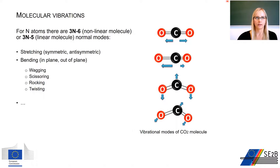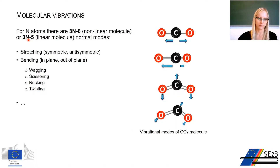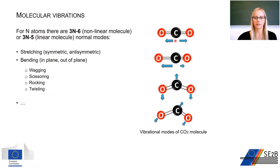In multi-atom molecules we have 3n-6 vibrational degrees of freedom, with an exception for linear molecules where we have 3n-5. These independent vibrations are called normal modes. Here you see an example of vibrational modes for a carbon dioxide molecule, which has 3 atoms and is linear, giving us 4 normal modes: two stretching modes — symmetrical and anti-symmetrical — and two bending modes.